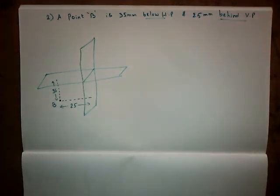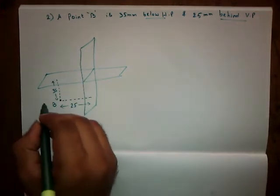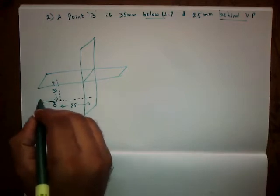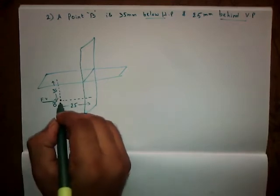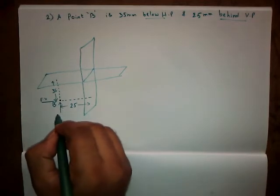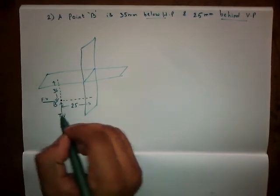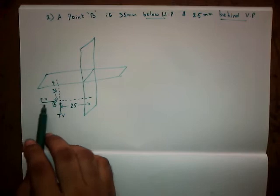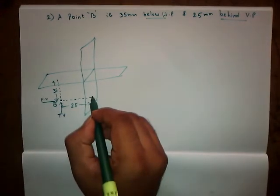Now we need to view the point in horizontal and vertical fashion. So horizontal I am viewing, this is going to be the front view, and vertical I am viewing from the point itself, this is going to be our top view.